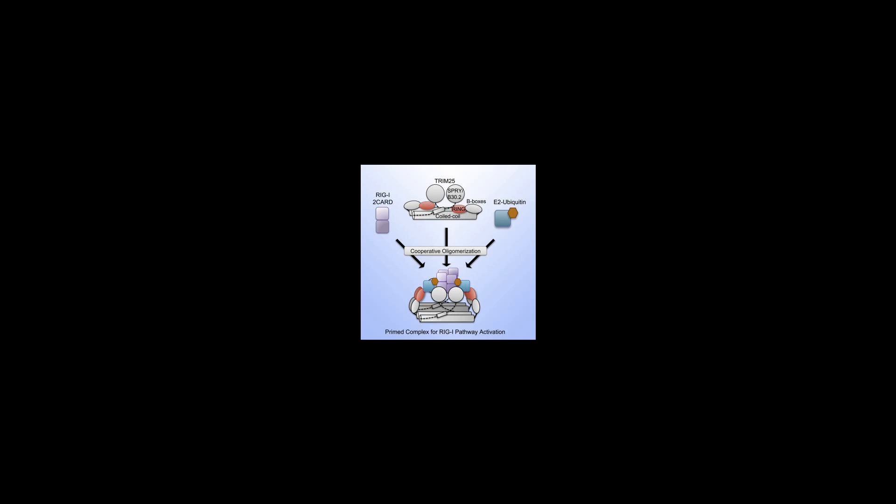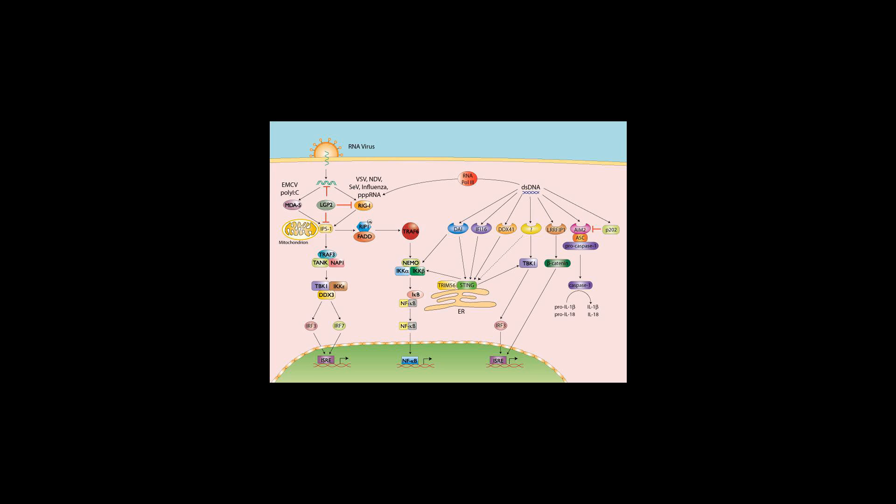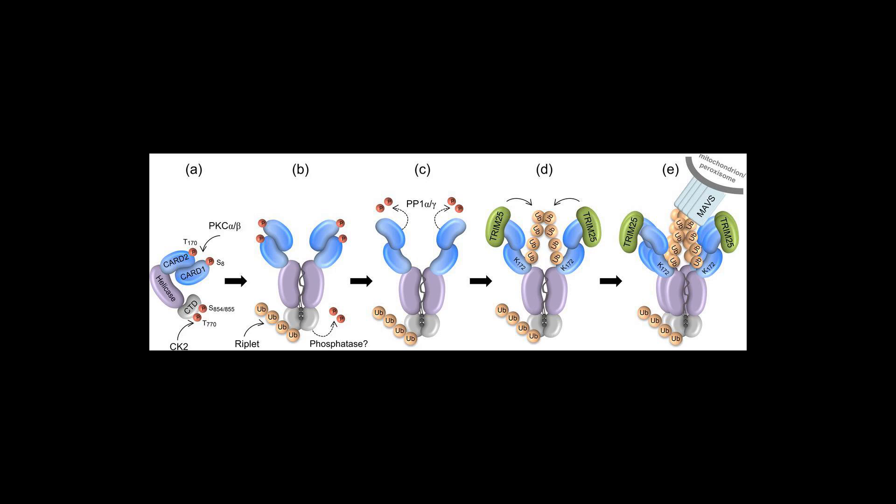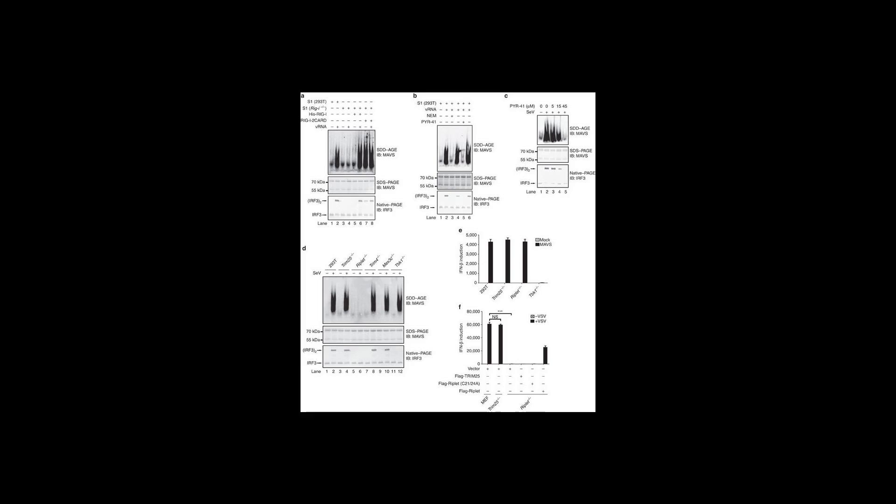Signaling pathway of RIG-I and MDA5: Because RLRs are pattern recognition receptors, there are certain features of viral dsRNA or ssRNA (single-stranded RNA) that RLRs are equipped to detect. These include double-stranded regions, specific nucleotide sequences, and 5-prime triphosphate modifications.